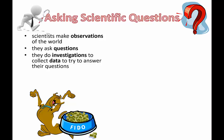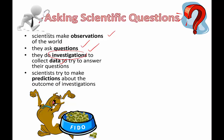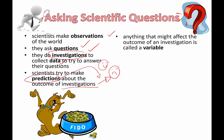So scientists make observations and then they ask questions. Then they design experiments and do investigations to try to collect data to answer their questions. They try to make predictions about the outcome of the investigations. Then they carry out the investigation and see if the predictions are right or not. And that can help them determine if they can publish a paper and share their scientific evidence with the world.